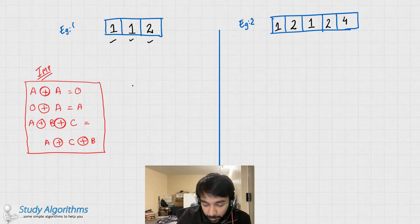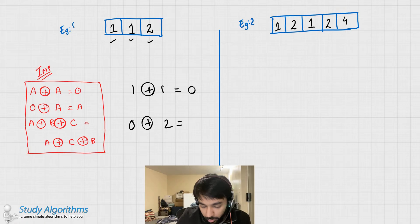When you try to XOR all of them, so 1 XOR 1 would give you 0, and then 0 XOR 2 would give you 2. In this case 2 is our answer, and we can just return it.